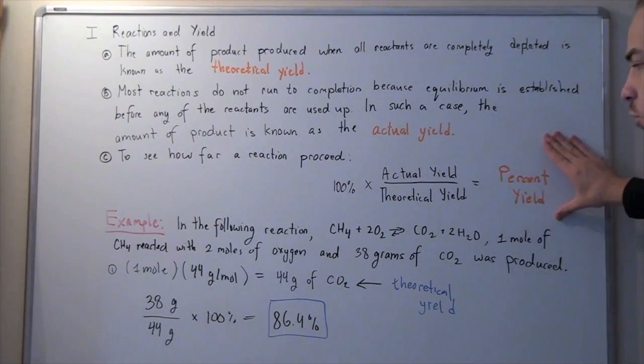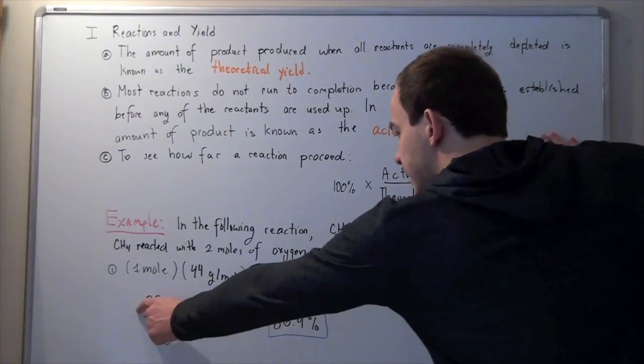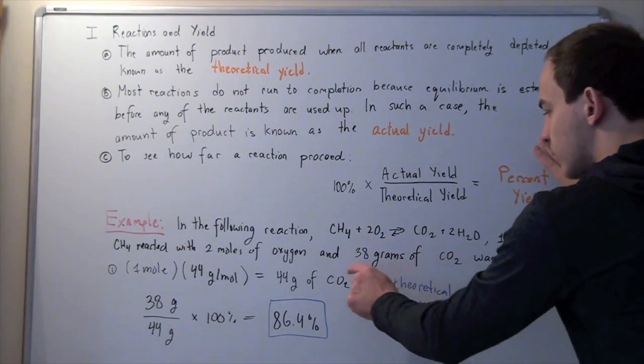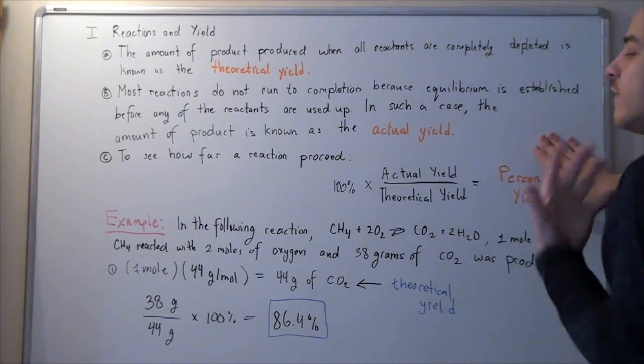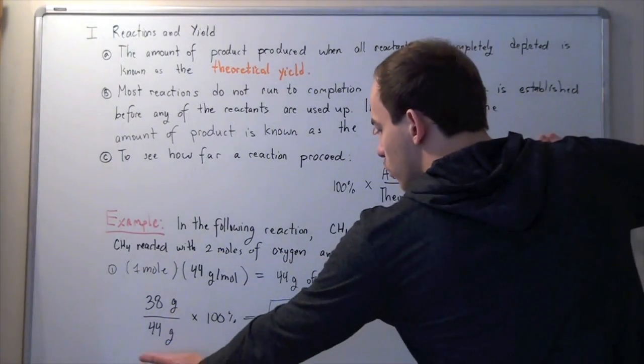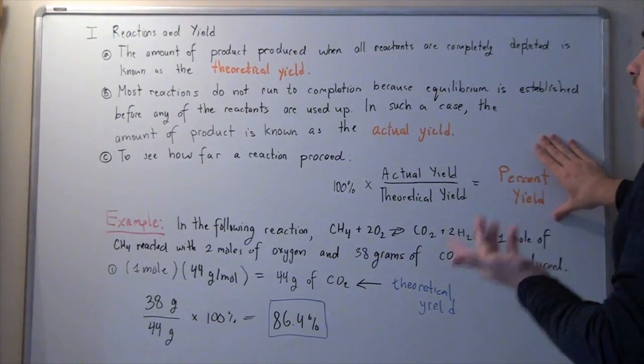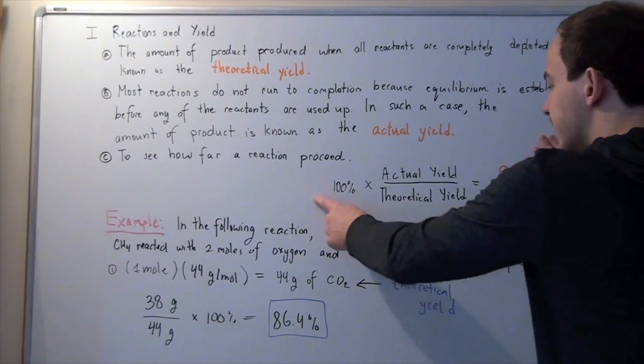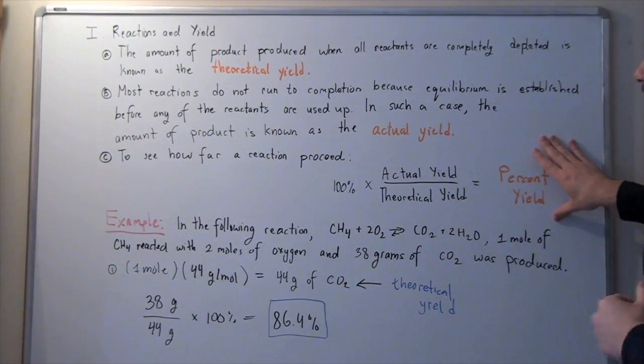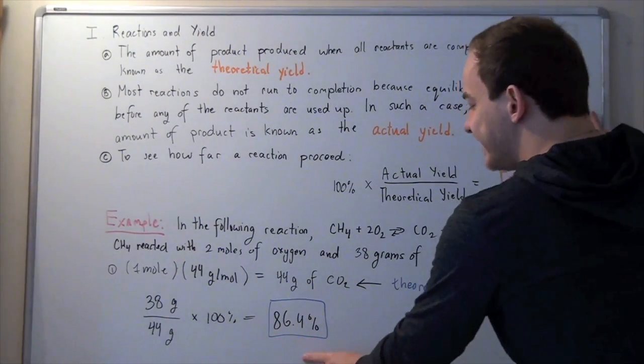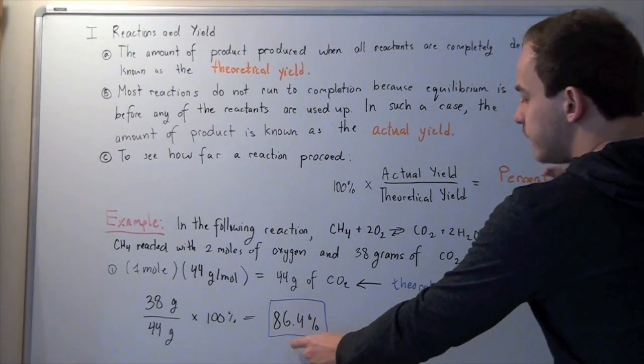So, now we follow our formula. We take our 38 grams, our actual yield that we found from the experiment, divide that by our 44 grams, our theoretical yield, multiply that by 100% to find the percentage, and we find that our percent yield is 86.4%.